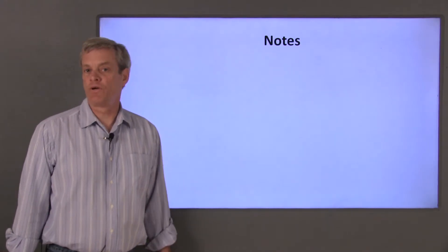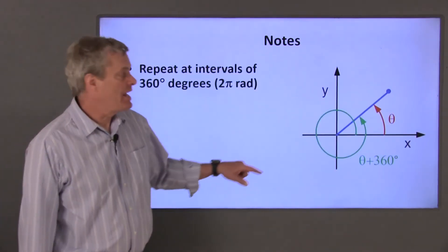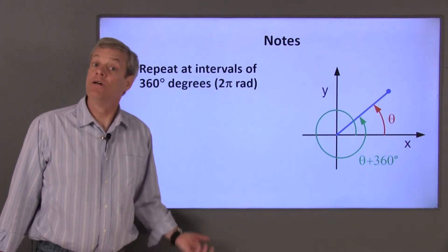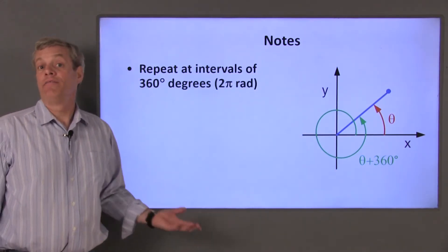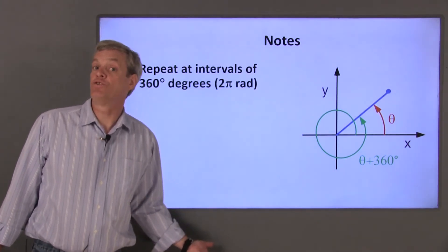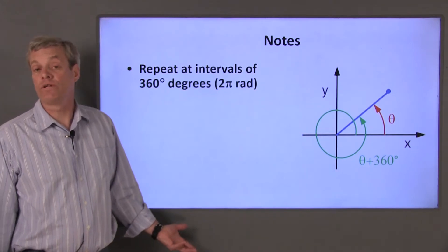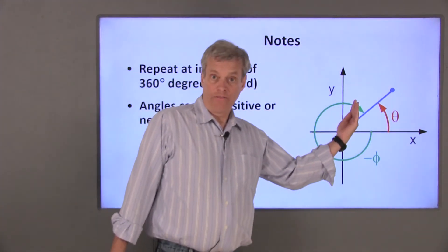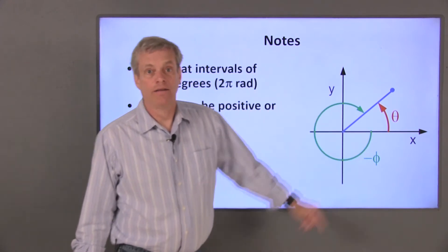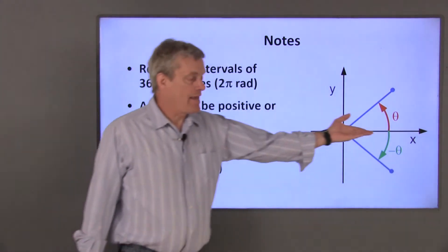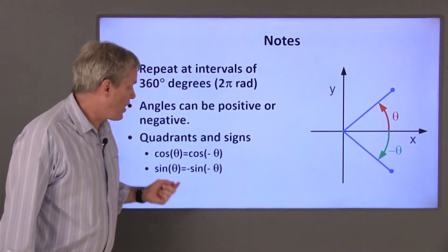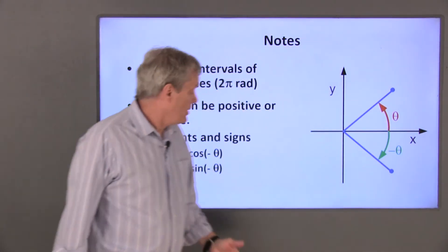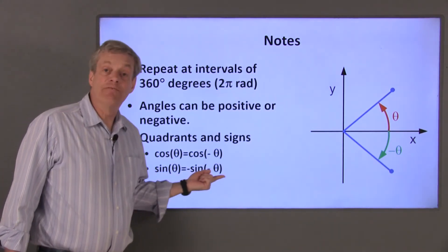Finally, I'll summarize a few properties of trig functions that are worth remembering. As I've already mentioned, adding 360 degrees or 2 pi radians to an angle doesn't actually change the angle, so it doesn't change the value of the trig function. That means that adding integer multiples of 360 degrees or 2 pi radians also doesn't change the angle or its trig functions. Angles can also be expressed as either positive or negative values. Changing the sign on this angle theta results in the same x value, so the cosine of negative theta is the same as the cosine of theta. The y value, however, changes sign, so the sine of theta is equal to the negative of the sine of negative theta.